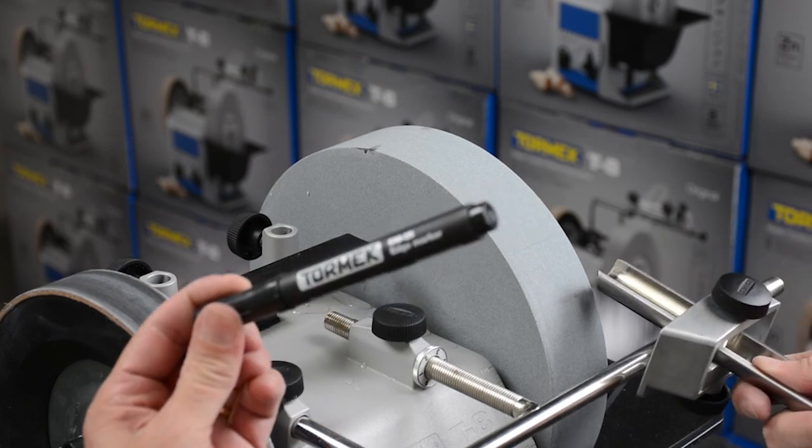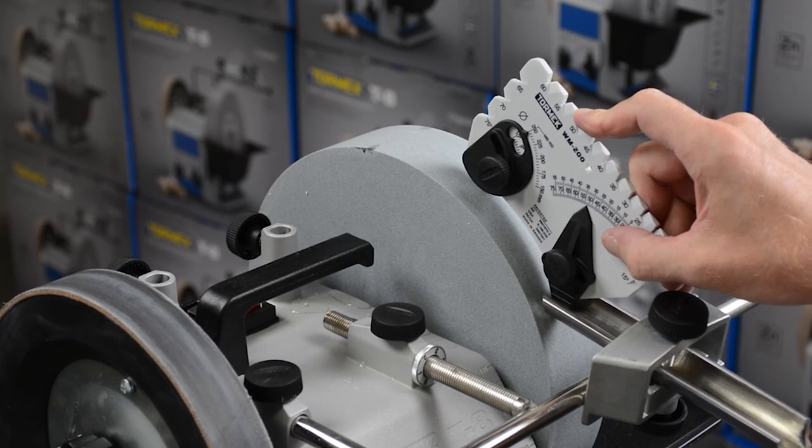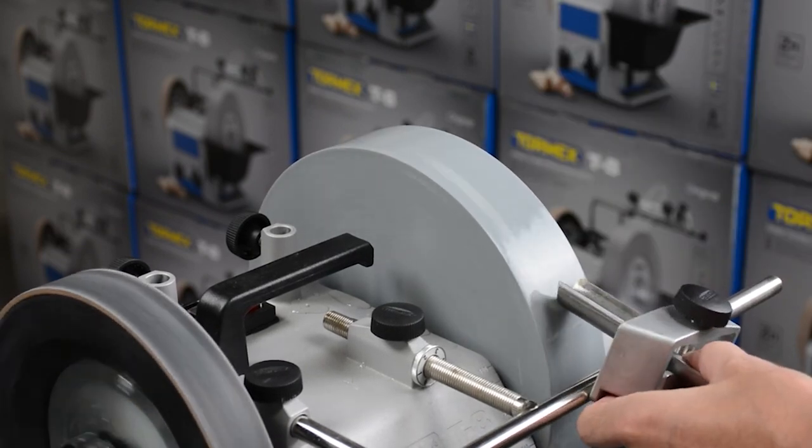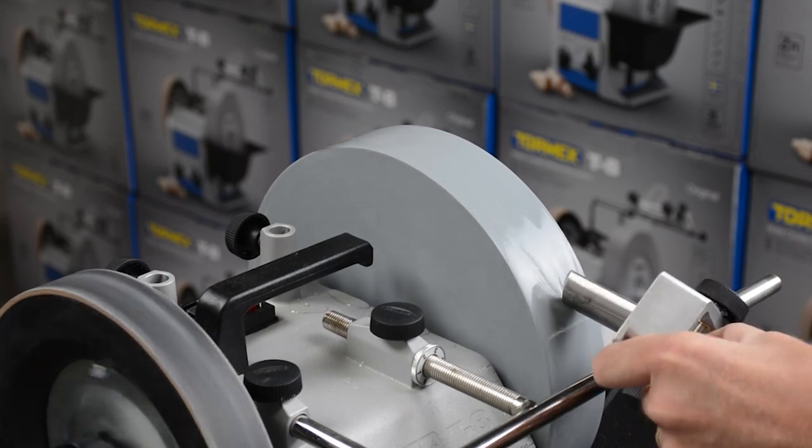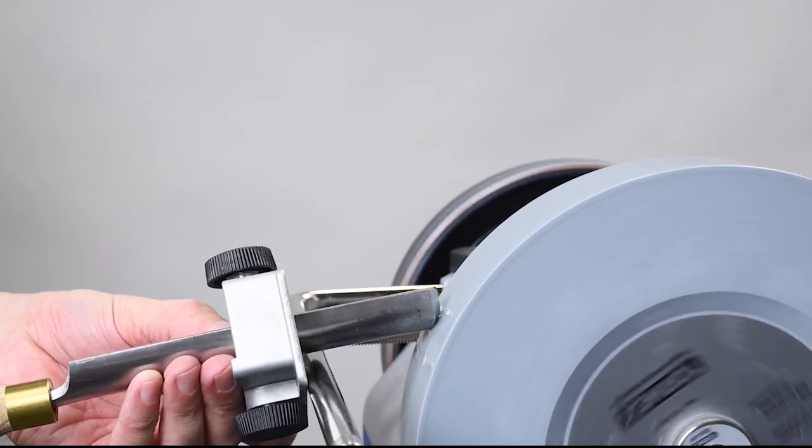For roughing gouges, use the marker method or the WM200 angle master to set the desired angle. Move across the stone rotating the jig to achieve the desired edge.